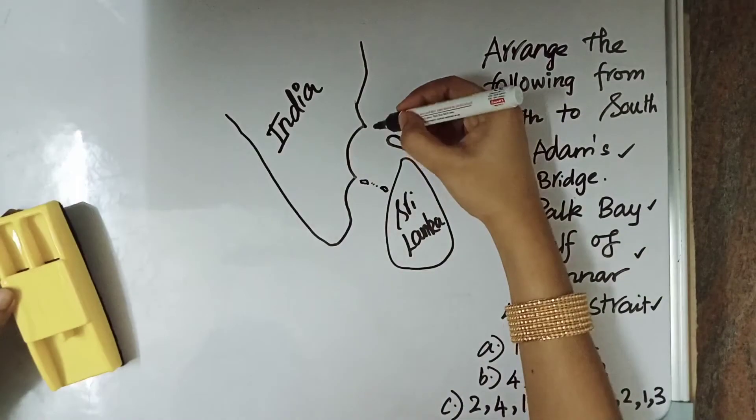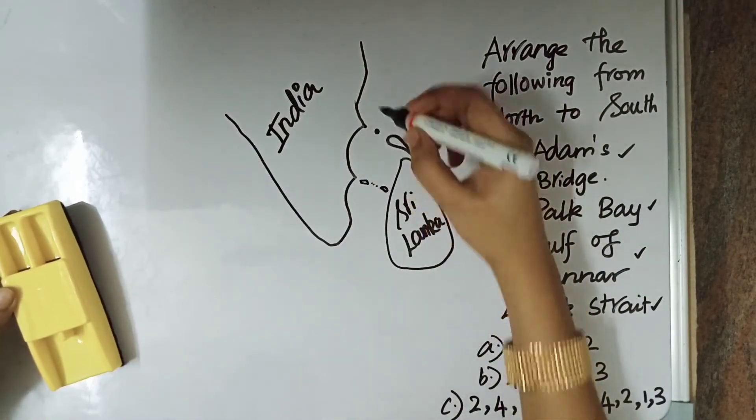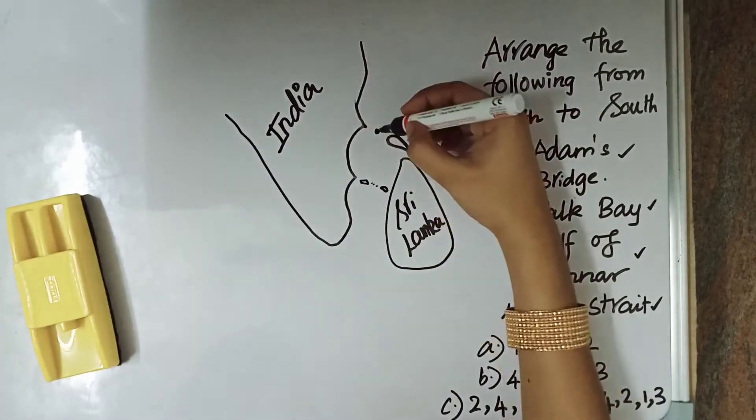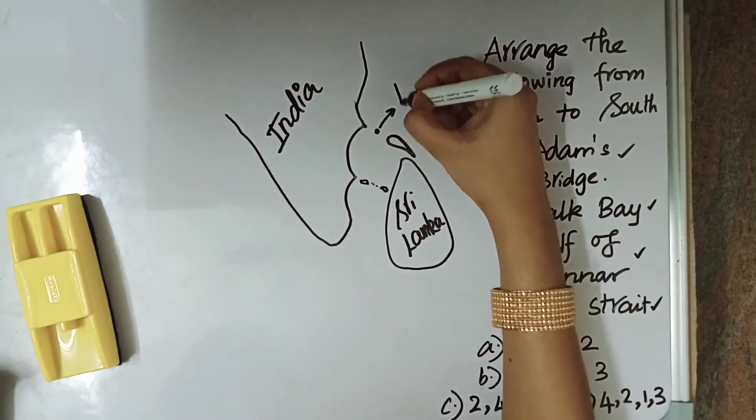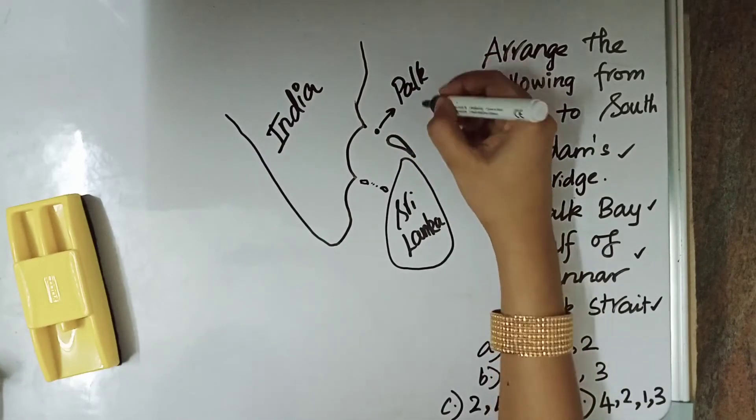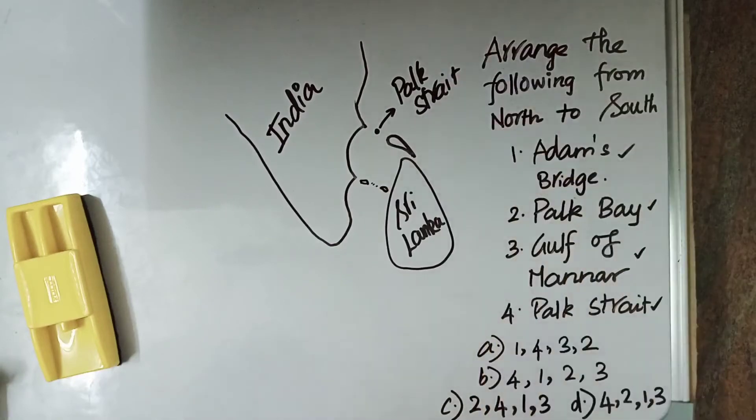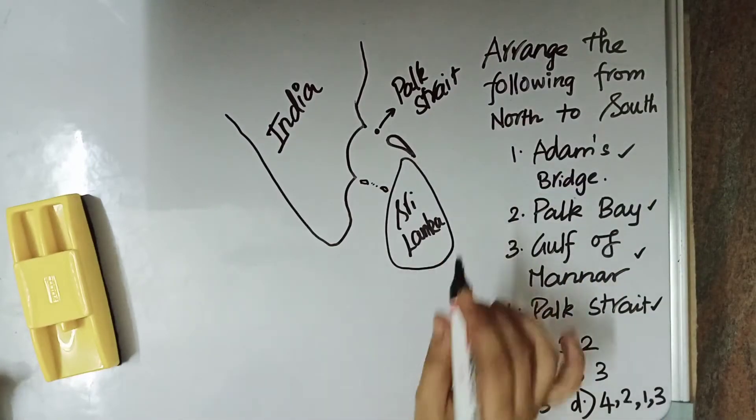First one is this narrow strip of water body. This narrow strip of water body between Sri Lanka and India. This is called Park Strait. Park Strait is on the northern side.